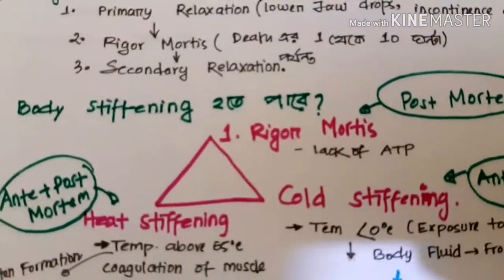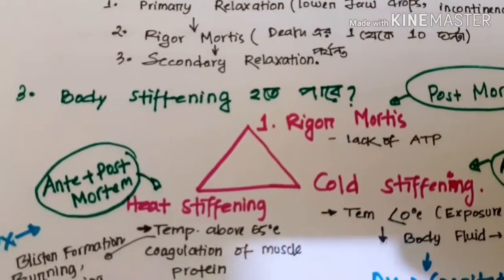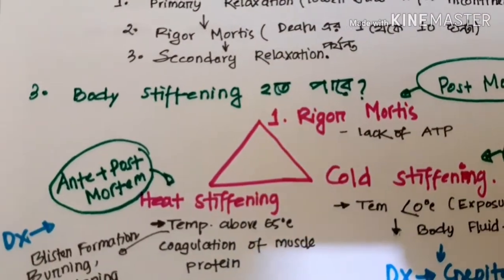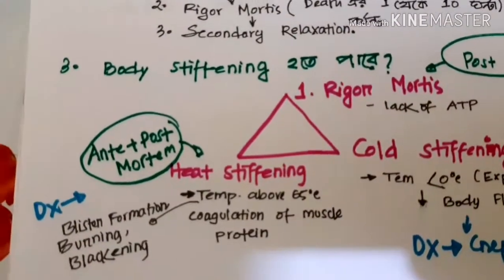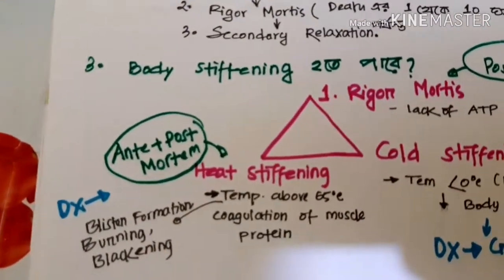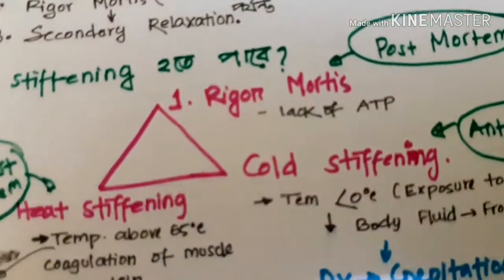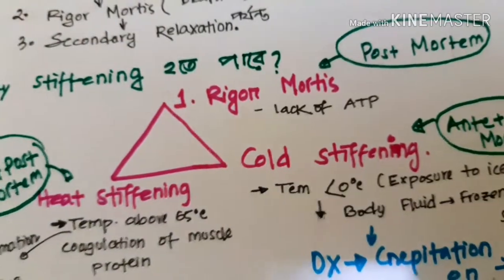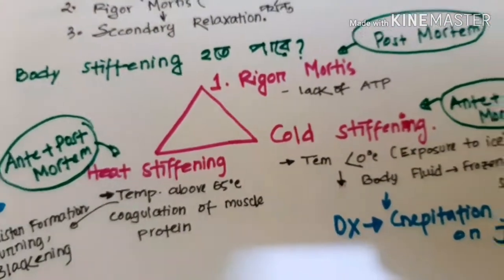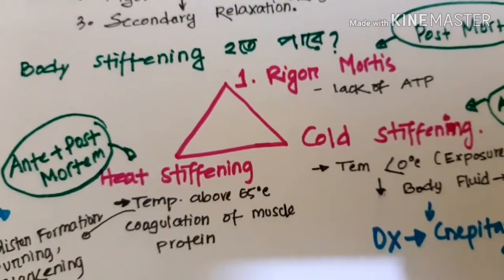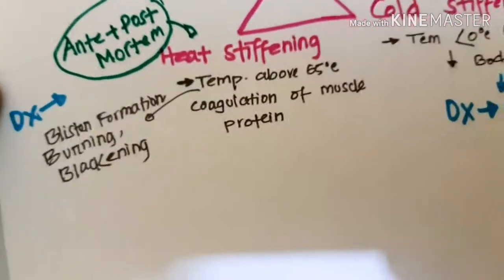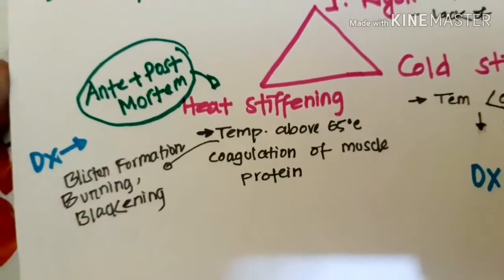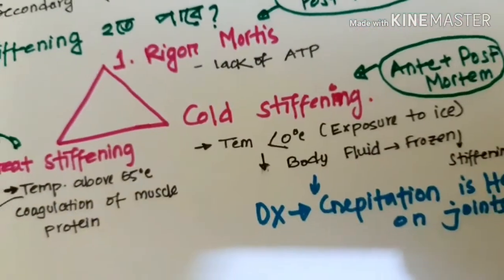When we observe rigor mortis, it begins after cellular death. The duration — the onset of rigor mortis — is almost 10 hours after cellular death. After 10 hours, we begin to see rigor mortis in the body. The body becomes extremely stiff and difficult to move. Beyond rigor mortis, it is also important to know about heat stiffening and cold stiffening.